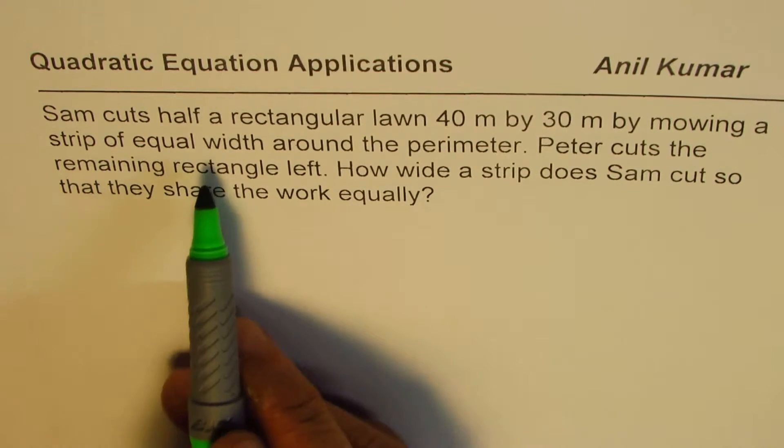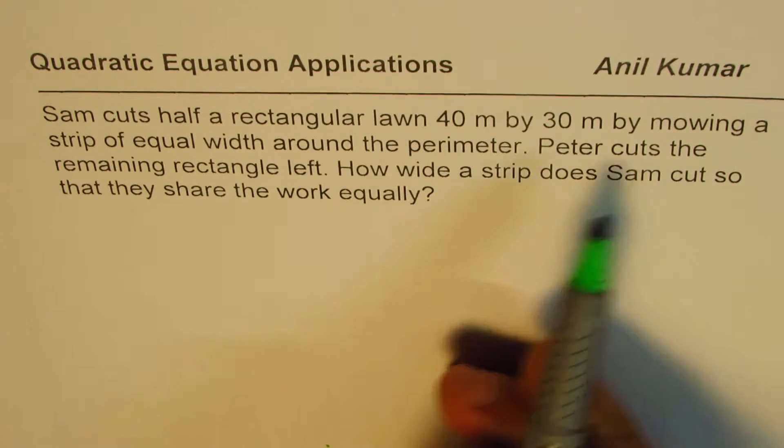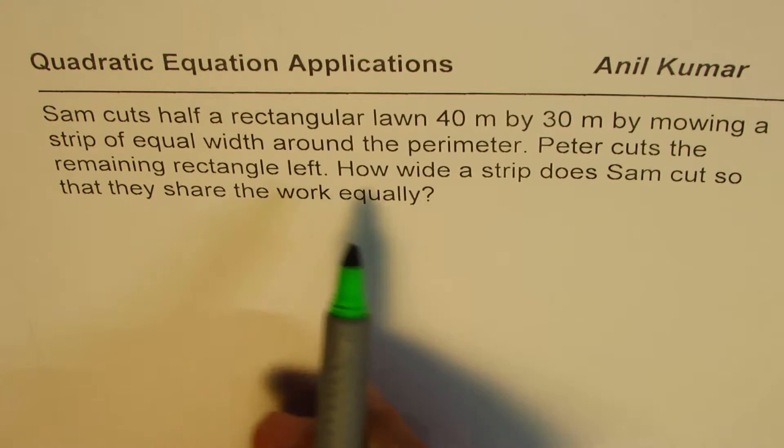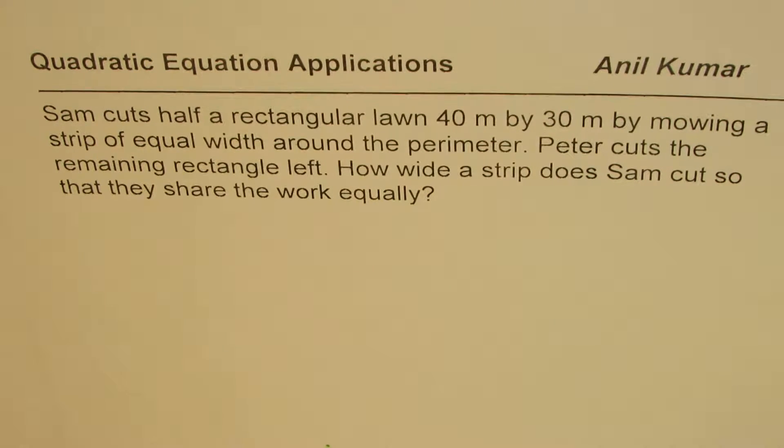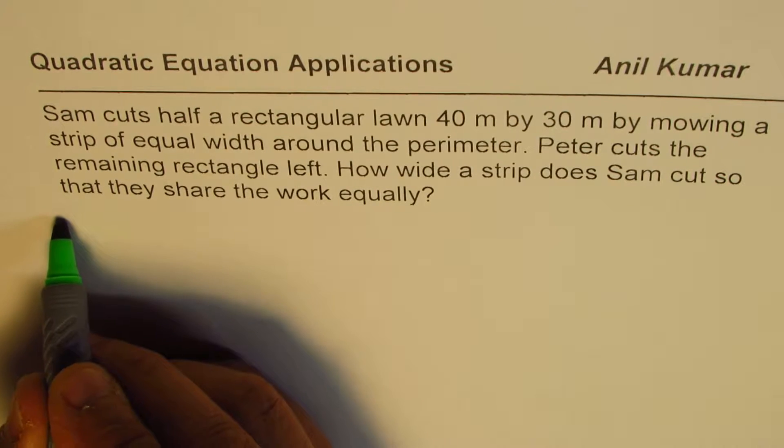...mowing a strip of equal width around the perimeter. Peter cuts the remaining rectangle left. How wide a strip does Sam cut so that they share the work equally? That's the question for you.